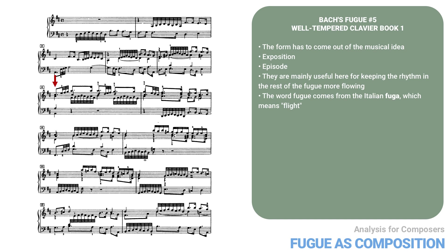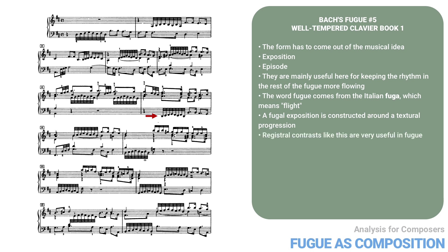Once the exposition is finished, in measure six, there's a little sequential episode based on motive A. Since a fugal exposition is constructed around a textural progression — in this case from one to four voices — this bar provides a moment of relief since it is only three voices and none of them in the bass clef. When the next entry arrives in measure seven, it's in the lowest register heard so far. Registral contrasts like this are very useful in fugue, especially since fugal textures are normally rather dense.